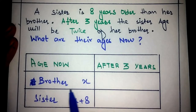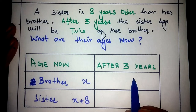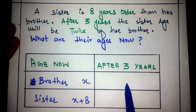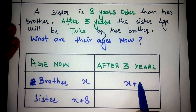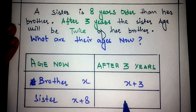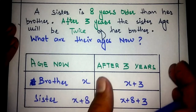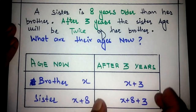Now write the ages after three years. If the brother's age now is X, after three years it will be X plus 3. If the sister's age now is X plus 8, after three years her age will be X plus 8 plus 3. Now we have equations for the present ages and for the ages after three years.